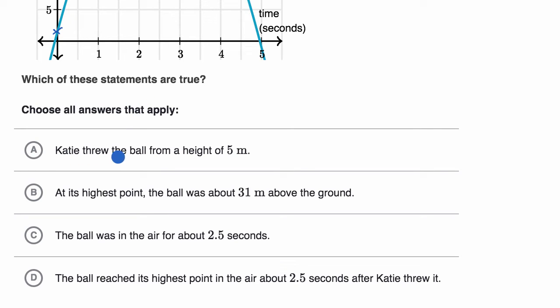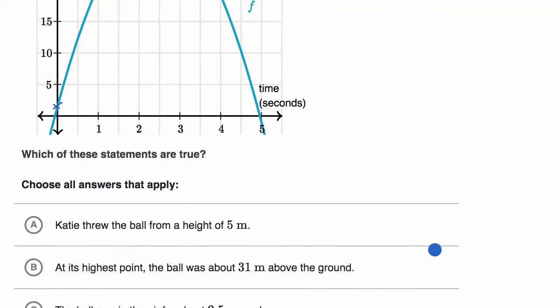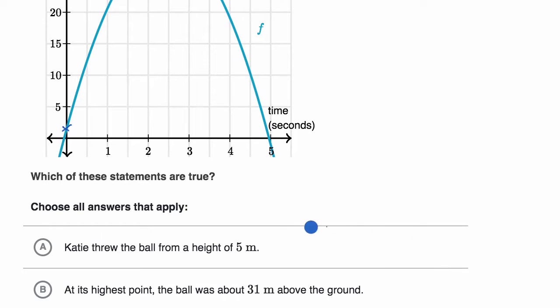The first one says Katie threw the ball from a height of five meters. So let's see if that's true. If she threw it from a height of five meters, that means the y-intercept would have been at five meters. At time t equals zero, it would have been at a height of five meters. Clearly that is not the y-intercept.